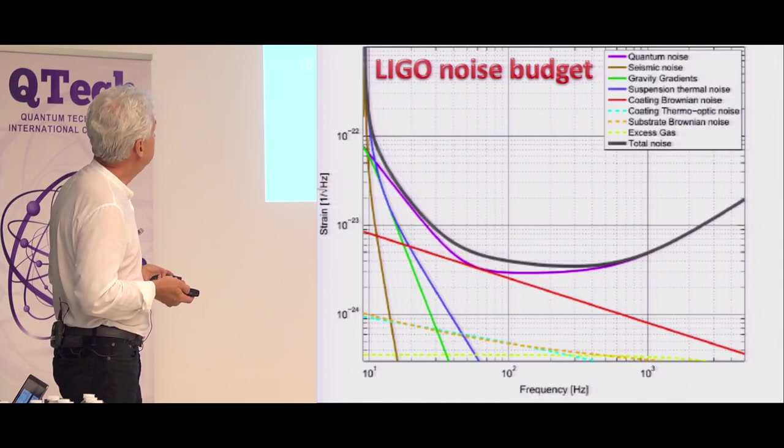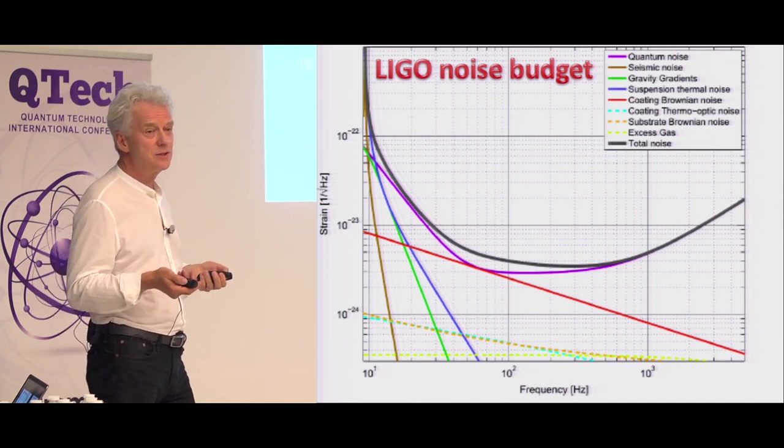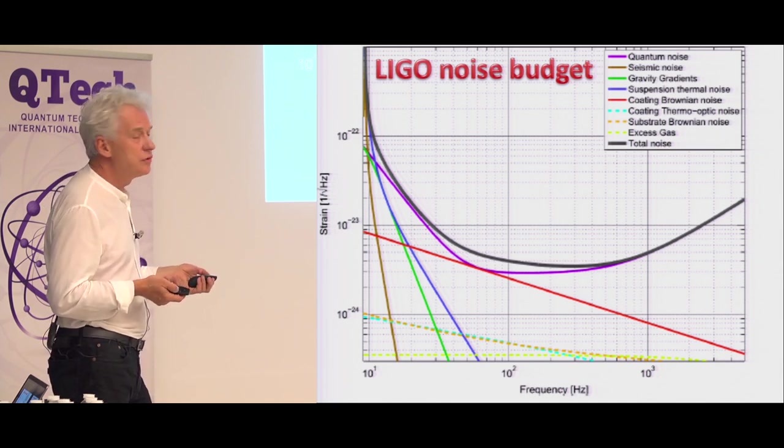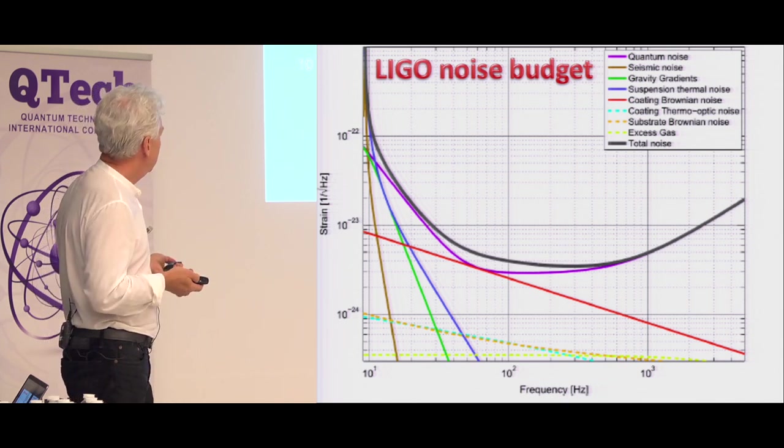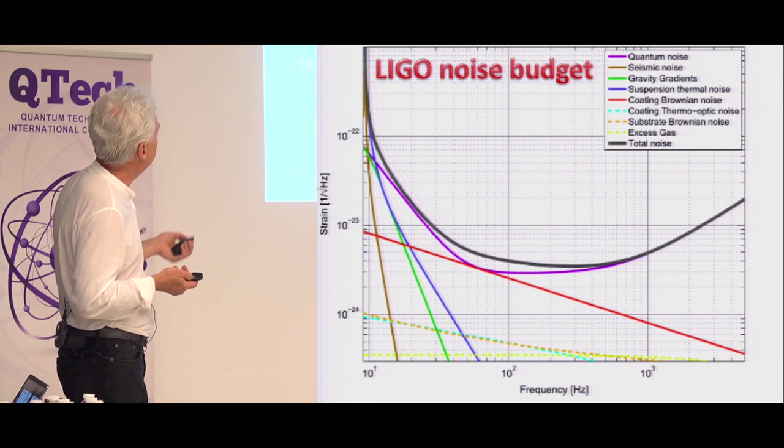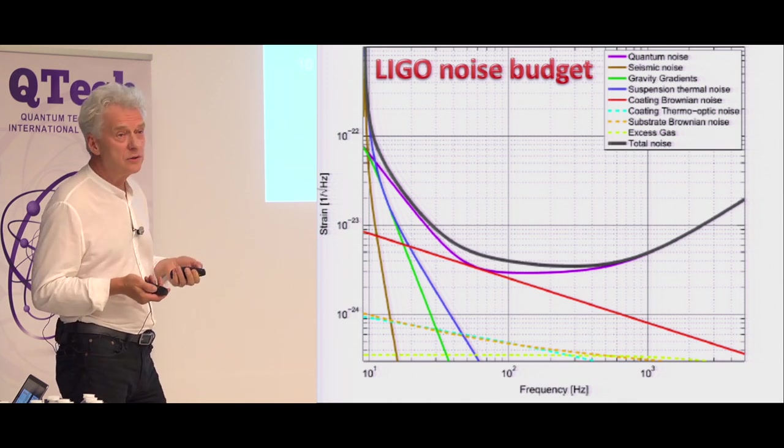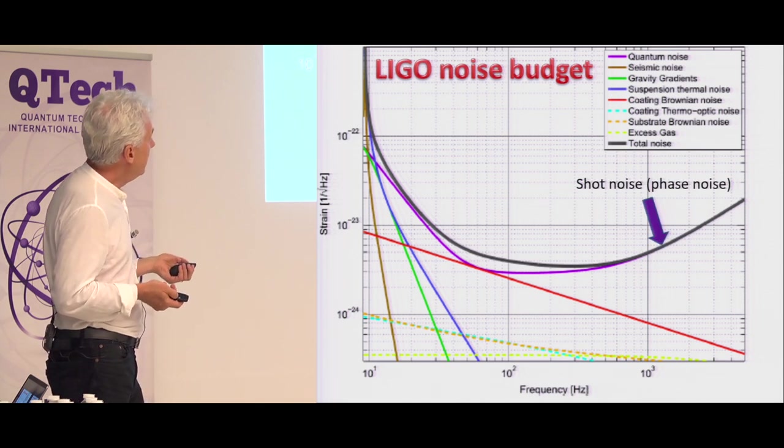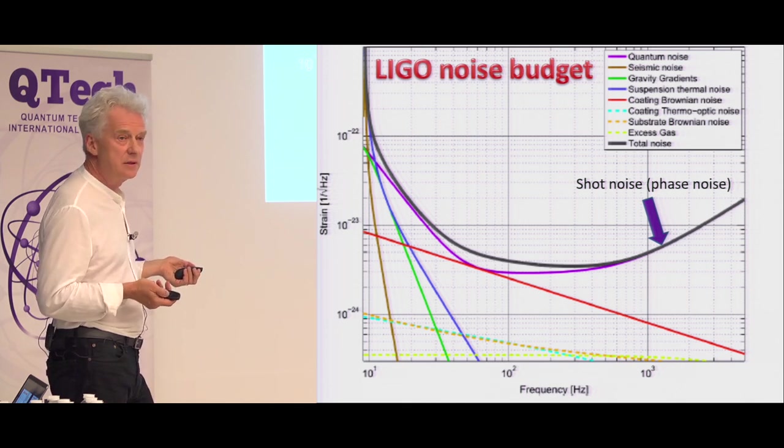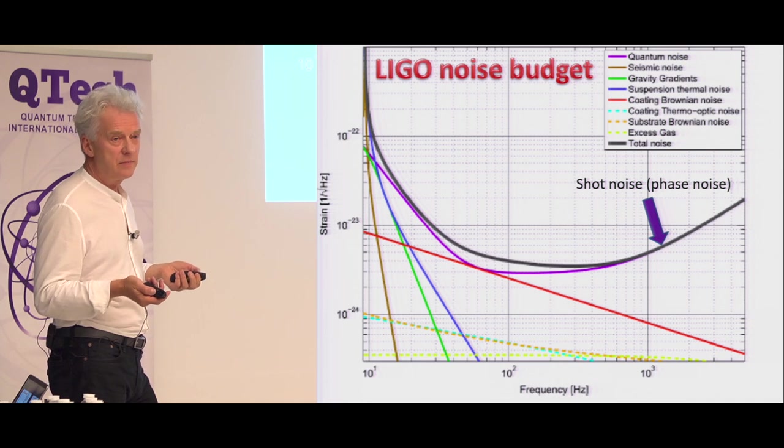So this is actually the LIGO Large Interferometer for Gravitational Wave Observation noise budget. And it's plotted here from 10 hertz to a few kilohertz. So in the previous talk, the emphasis was on the low frequency. And here, it's what they are looking at at the moment with LIGO. And the important thing is that this purple curve is the quantum noise limit. So if you measure relatively quickly, that is to say, you're interested in higher frequencies, then the shot noise of light, which sets the phase uncertainty, is your limit. If, on the other hand, you measure longer corresponding to lower frequencies, then it's the radiation pressure, the back action noise of light, which sets the limit.